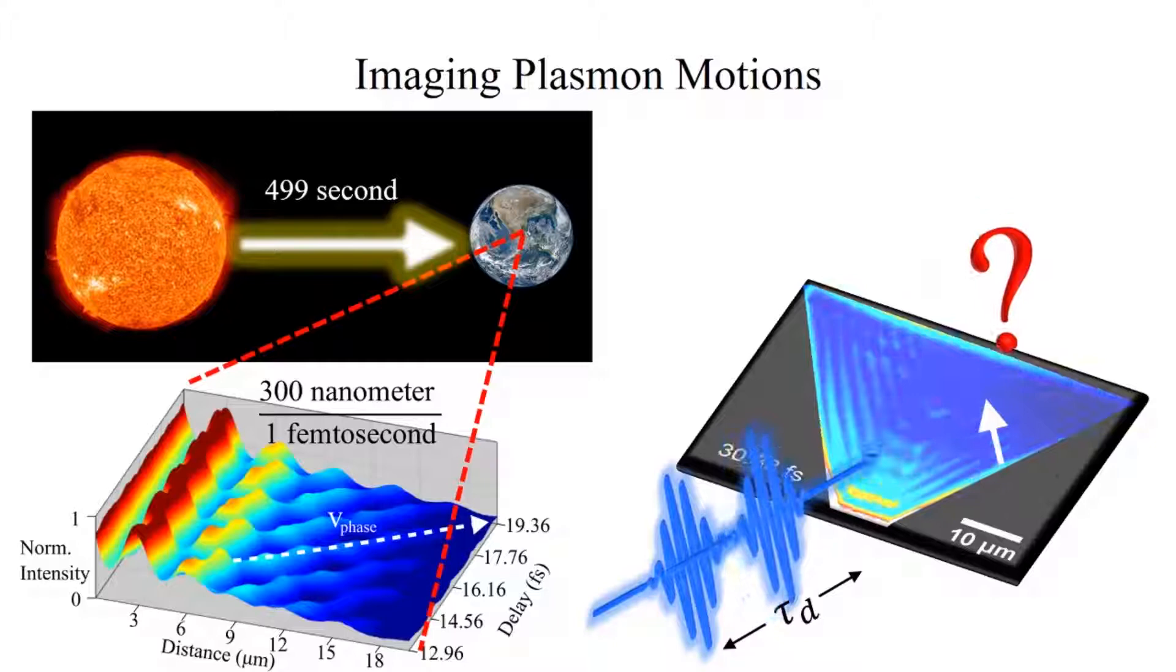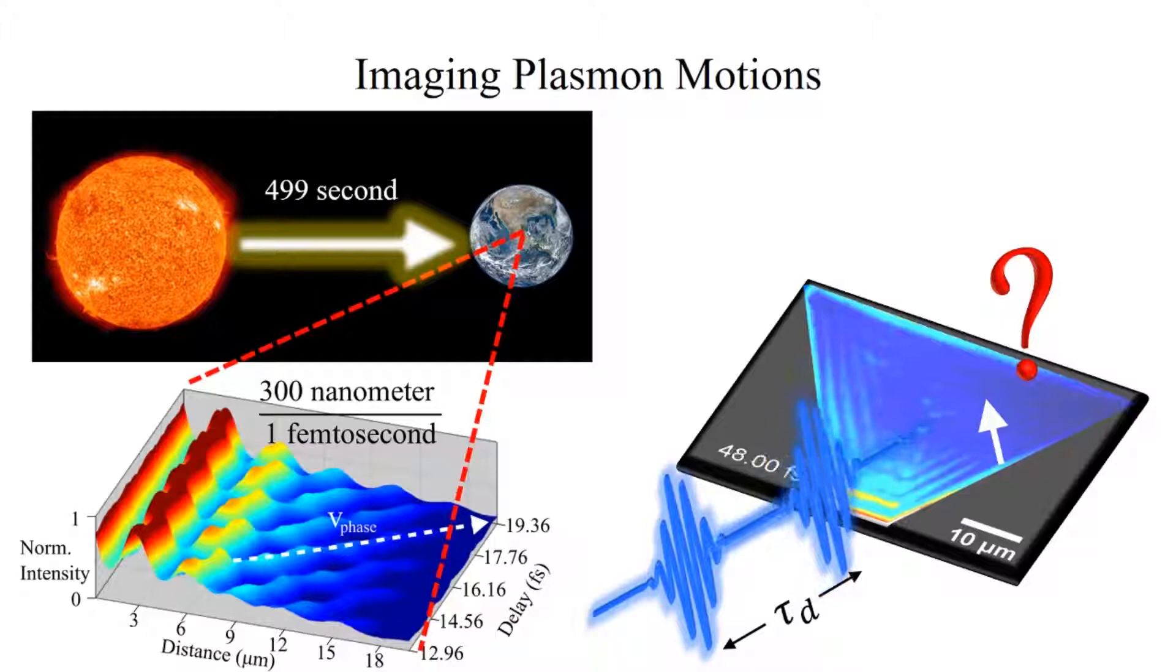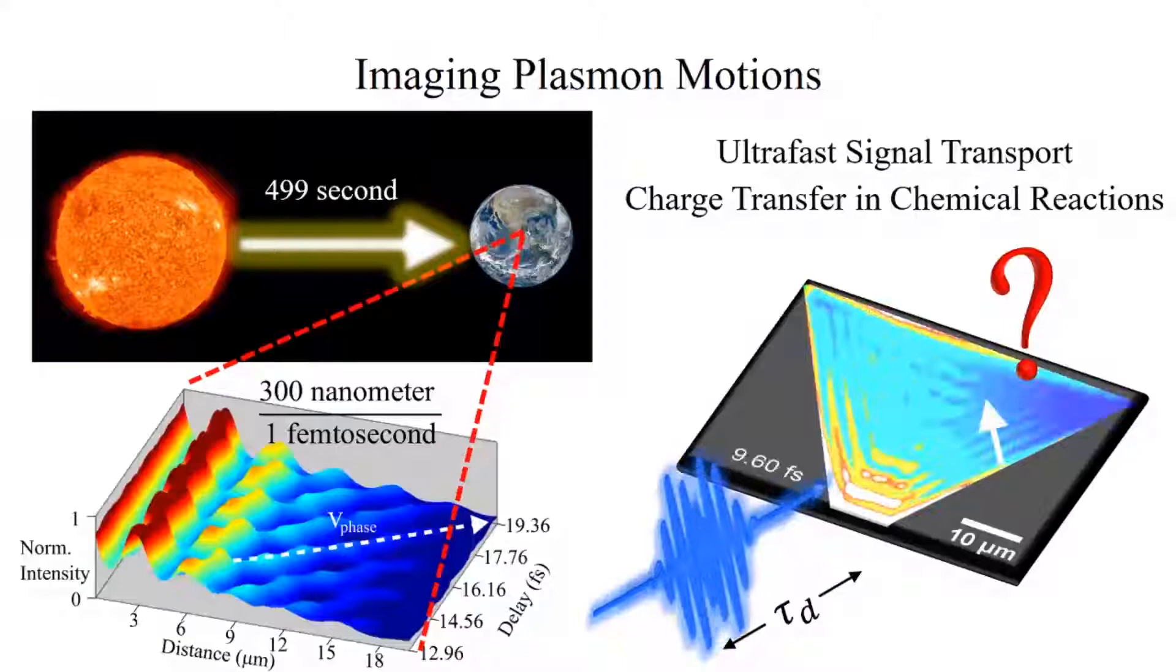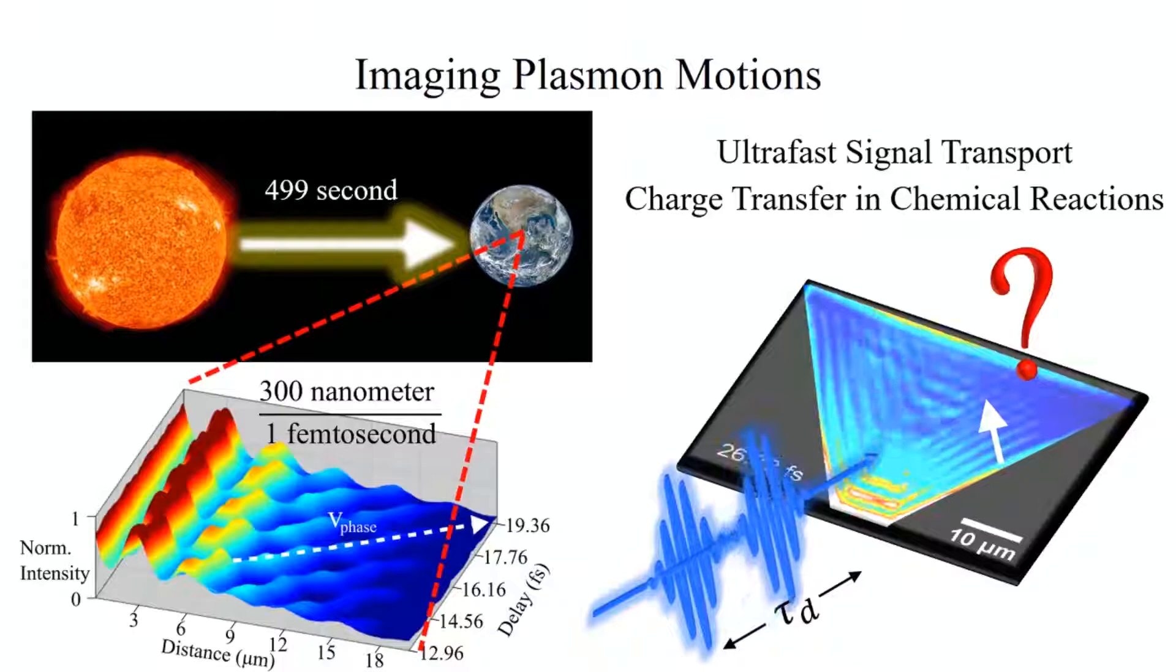What we learn from the electron dynamics are the phase and group velocities of the surface plasmon polaritons, which determine the ultrafast signal transport in plasmonic circuits, and they are also crucial in the understanding of the charge transfer process of chemical reactions that happen on the nanometer spatial and femtosecond temporal scale.